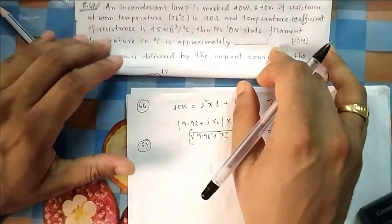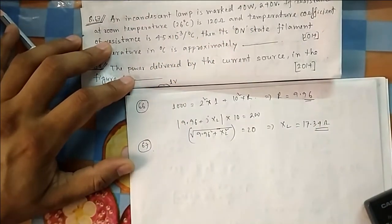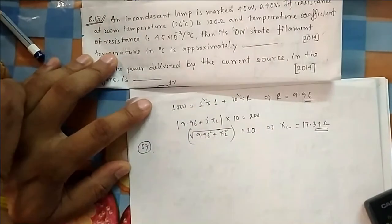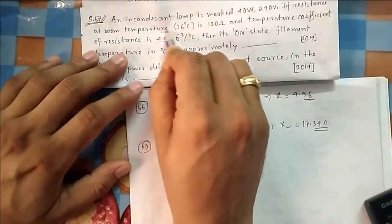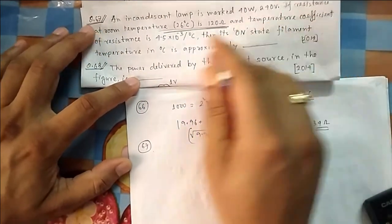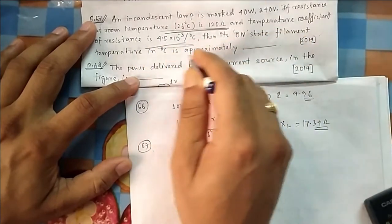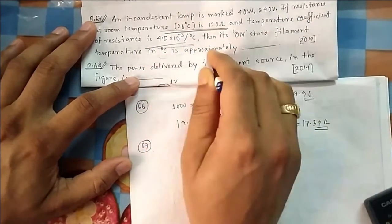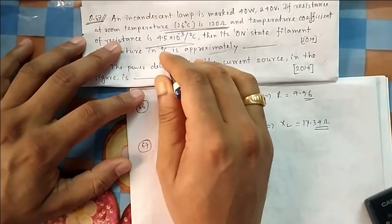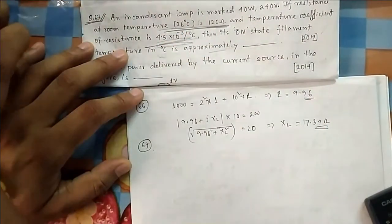In question 67, an incandescent lamp is marked 40 watt, 240 volt. The resistance at room temperature of 26°C is 120 Ω. The temperature coefficient of resistance is given. In the on-state, the filament temperature will be very high, and accordingly the resistance will also be very high — that's why this temperature coefficient is provided.